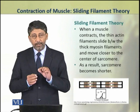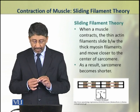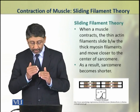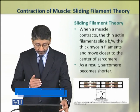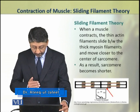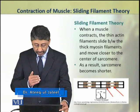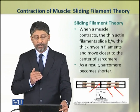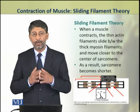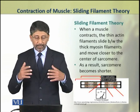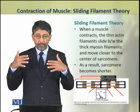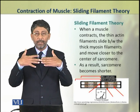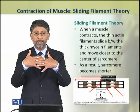When a muscle contracts, the thin filaments slide between the thick myosin filaments and move closer to the center of the sarcomere. As a result, the sarcomere becomes shorter — that is, the thin filaments slide past the thick filaments and the length of the sarcomere is shortened.